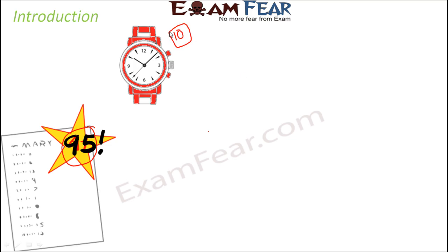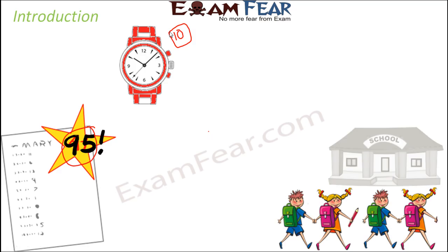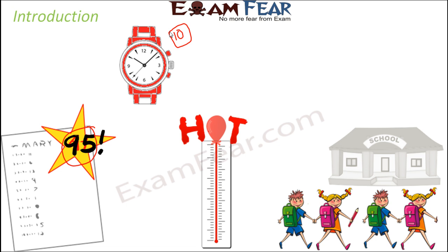How many students are there in your school? You might say there are 5,000 or 2,000 students — those are again numbers. We also talk about temperatures; sometimes we say today is the hottest day of the season and the temperature has gone as high as 47 degrees Celsius. That 47 is again a number.